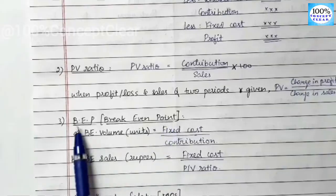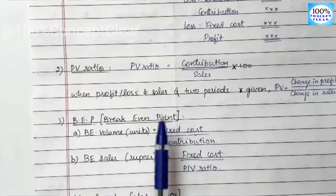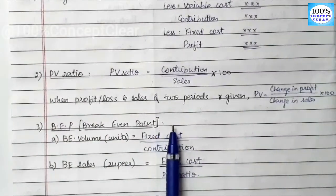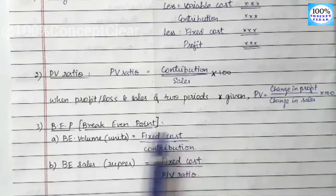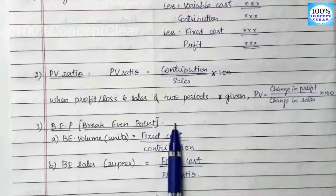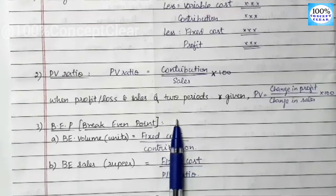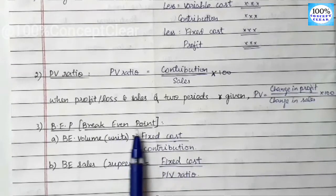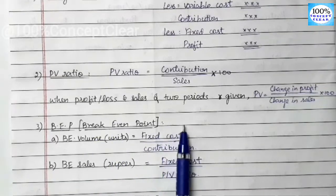Next, we have the Break-Even Point, or BEP. The break-even point is the no profit, no loss point. Every business has such a point where total revenue equals total cost — that is the break-even point.